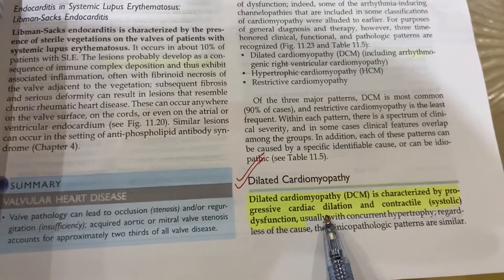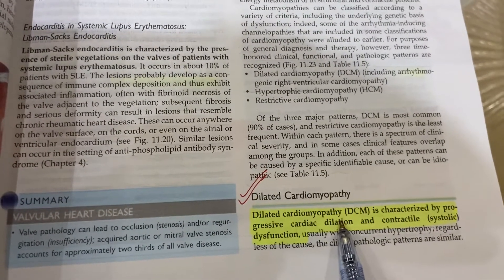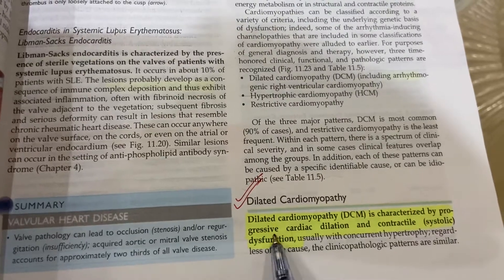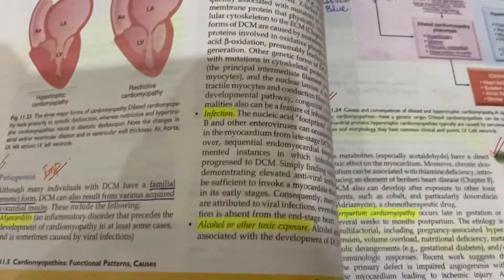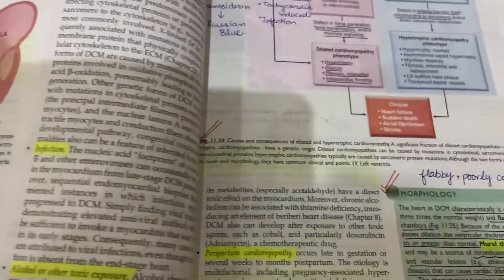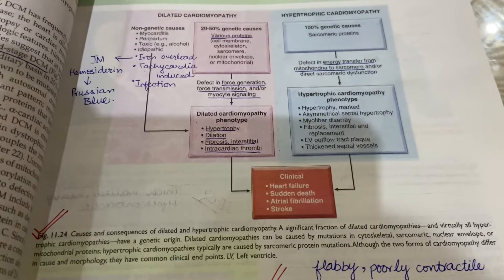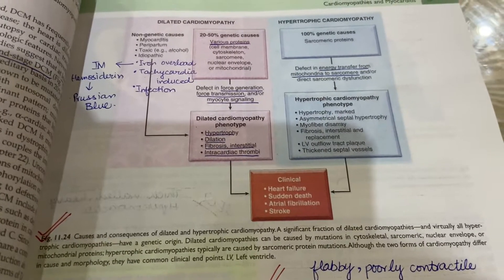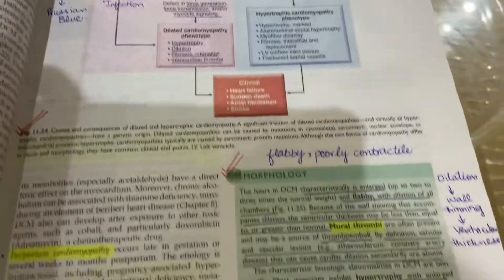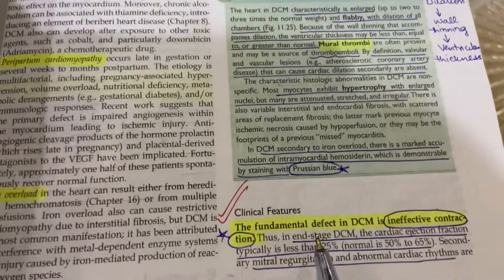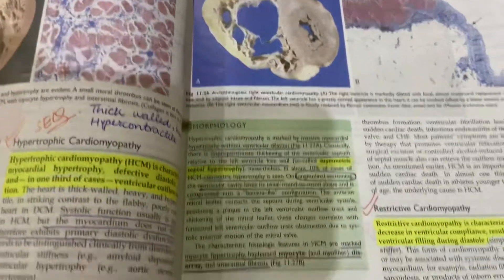Dilated cardiomyopathy is important for the ACQ point of view. Its pathogenesis is important, and then Figure 11.24 — causes and consequences of dilated and hypertrophic cardiomyopathy — is important for ACQs. Its morphology is important, and its clinical features are important as well.